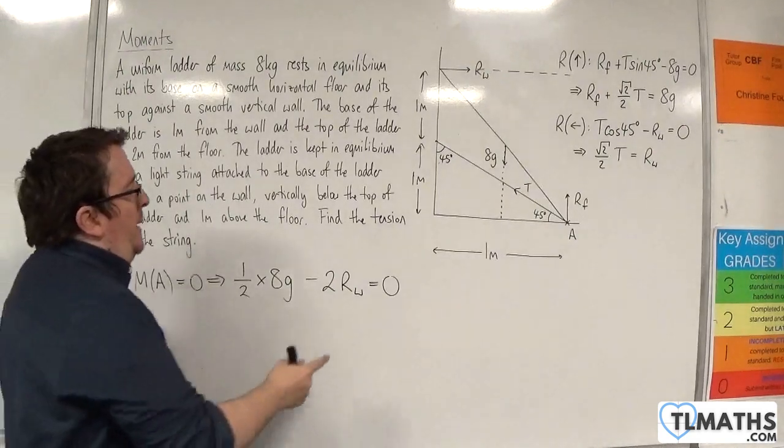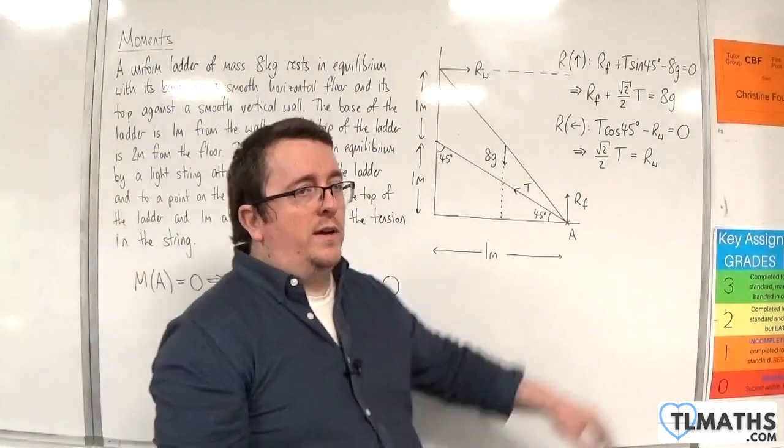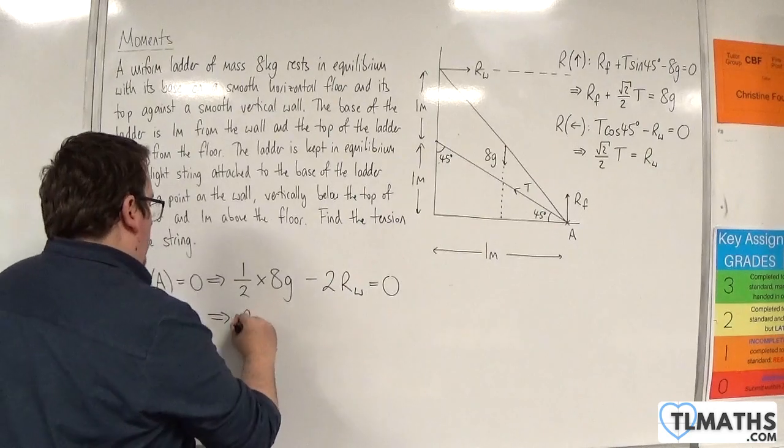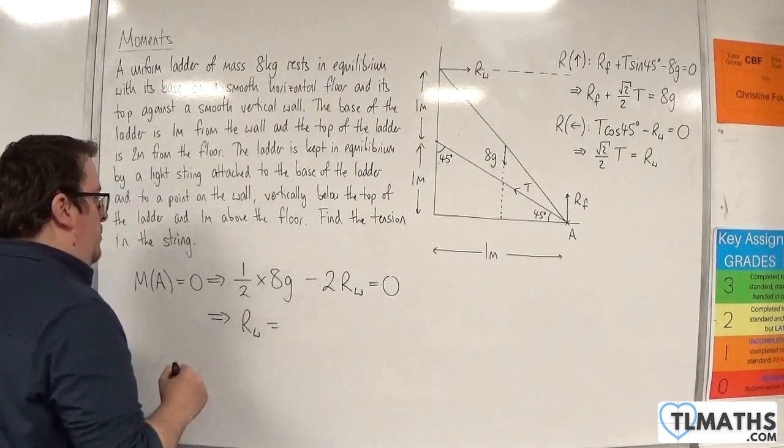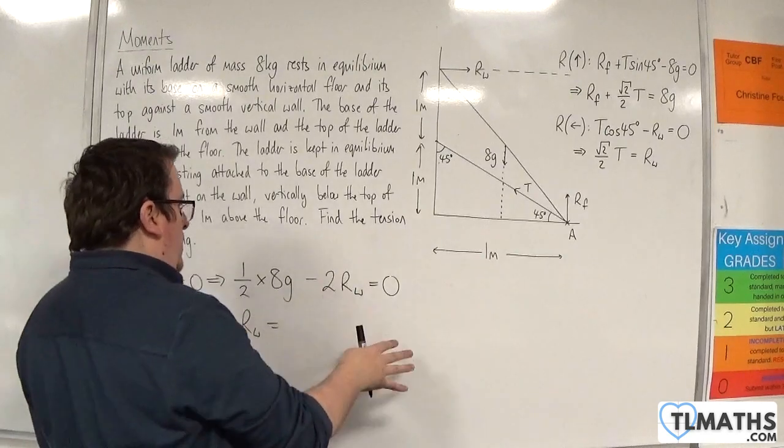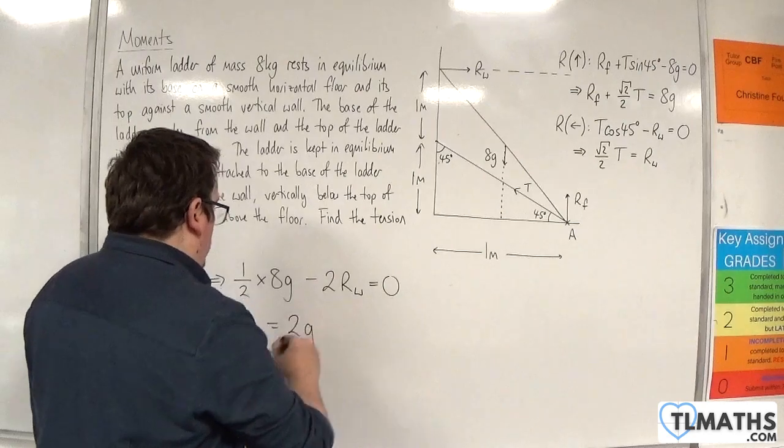Now, this is good news, because this allows me to find RW, and then I can substitute it in here to work out the tension. So RW is equal to, well, half times 8 is 4, so we've got 4g is 2RW, so that means that 2g would be RW.